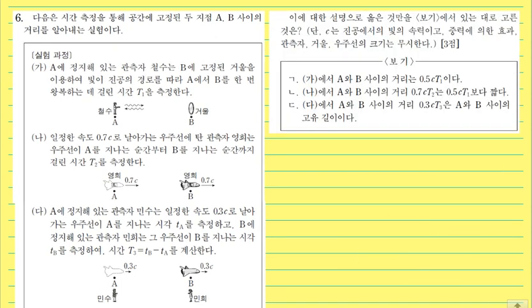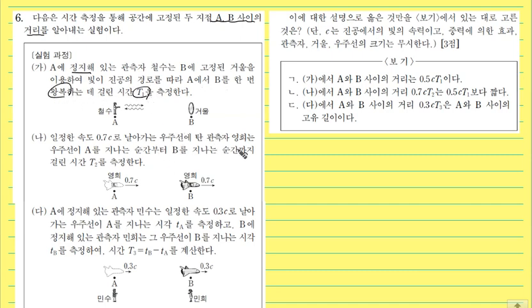자 6번 문제 풀어보겠습니다. 다음은 시간 측정을 통해 공간에 고정된 두 지점 A, B 사이의 거리를 알아내는 실험입니다. 실험 과정 가를 보게 되면, A에 정지해 있는 관측자가 B의 고정된 거울을 이용해서 빛이 진공의 경로를 따라 A에서 B를 한번 왕복하는 데 걸리는 시간 T1을 측정했다고 했어요.